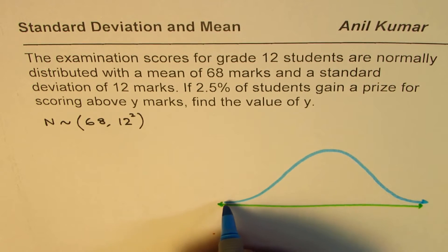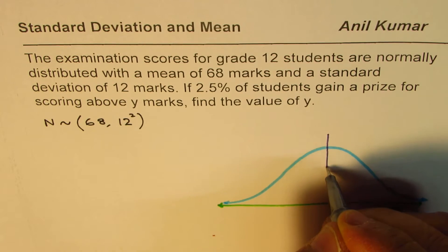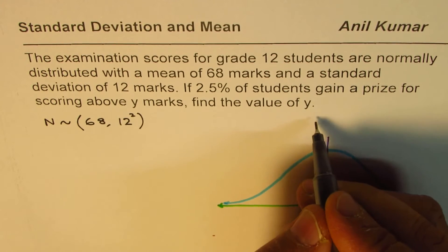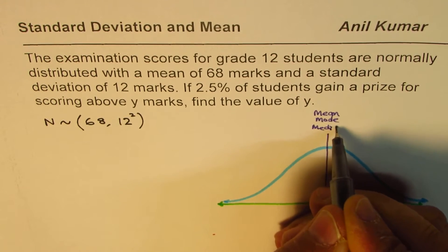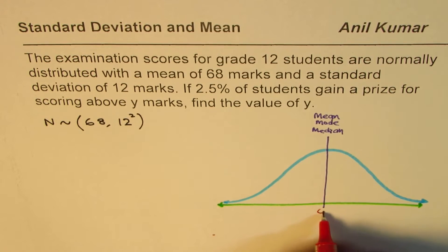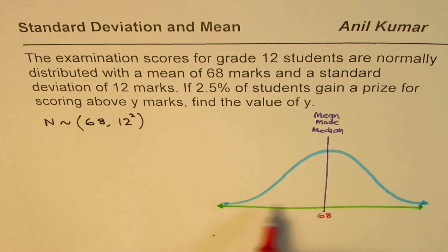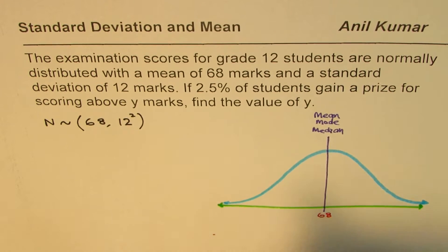Most of the things which we practically come across, their distribution follows this pattern, especially when we are talking about large numbers. This is the mode, the average value. In this bell graph you'll find that all mean, mode, and median are right at the center. For us, the value is given as 68 marks, so this is at 68. 68 marks is the average marks for all grade 12 students in this particular case.